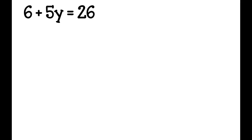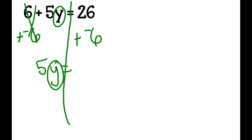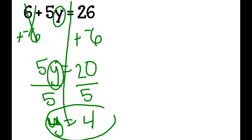6 + 5y = 26. I draw my line to show the different sides of my equation and circle my variable. I undo the positive 6 by adding a negative 6, leaving 5y = 20. Then to get y by itself, I divide both sides by 5 — y equals 4. I circle it, and that's my answer.